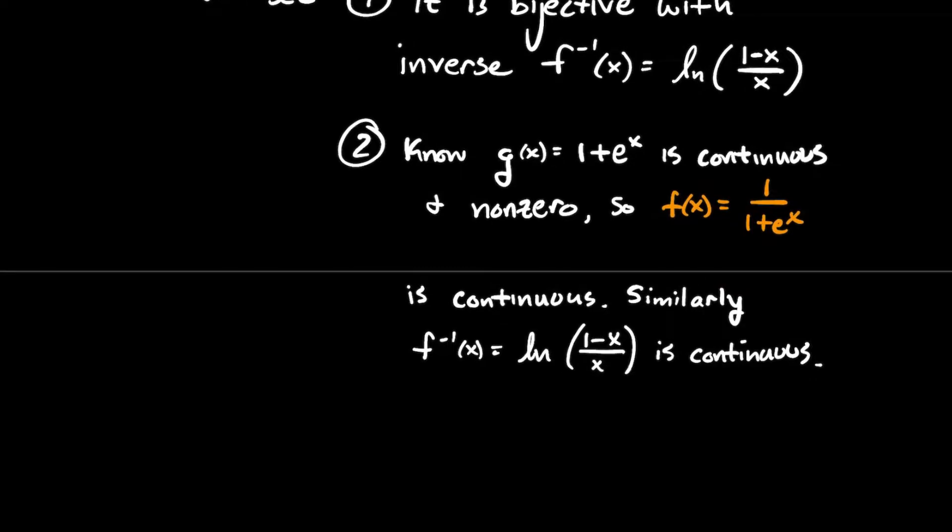And then a similar story, we're going to invoke some properties about what we know about the natural log, that that function f inverse is also continuous. So we're saying that our function is bijective, and both it and its inverse are continuous. Therefore, it's a homeomorphism.